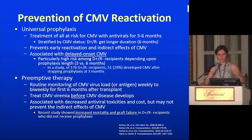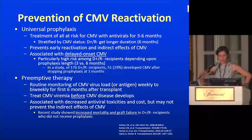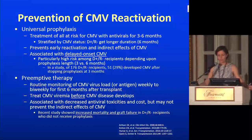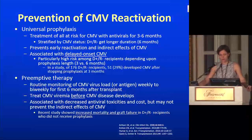The alternative is preemptive therapy — routine monitoring of CMV virus load or antigen weekly to biweekly for the first six months, treating viremia hopefully before disease develops. This is associated with decreased antiviral toxicities and cost, but may not prevent the indirect effects of CMV, which we're caring about more recently. Recent studies showed increased mortality and graft failure in D+ R- recipients who did not receive prophylaxis.